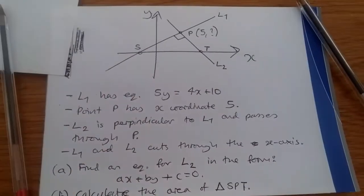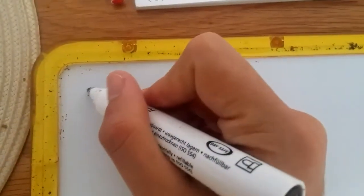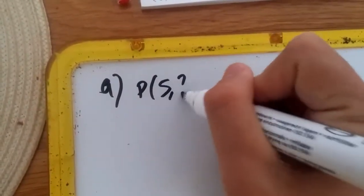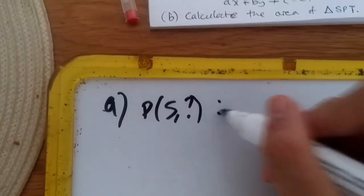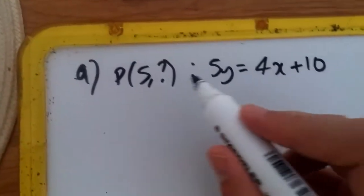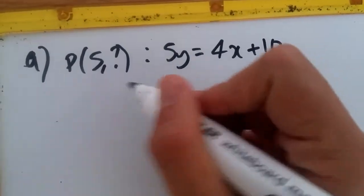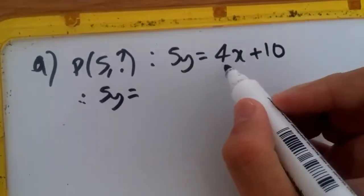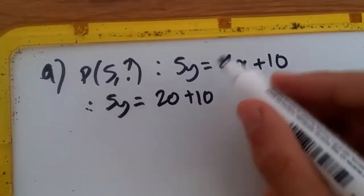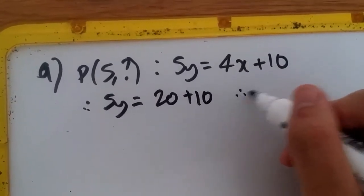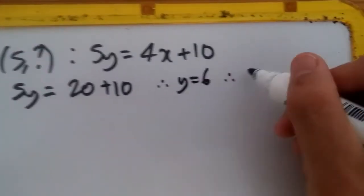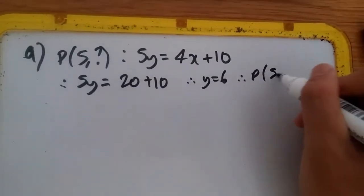Okay, let's do this. So part A. At point P, which is (5, unknown), we can substitute this into 5y = 4x + 10. Replacing x with 5, we're going to have 5y = 4 times 5, which is 20 plus 10. This gives you 30. Then 5y = 30. Hence, dividing 30 by 5 gives us y = 6. Therefore, our coordinates for P is (5, 6). Straightforward.